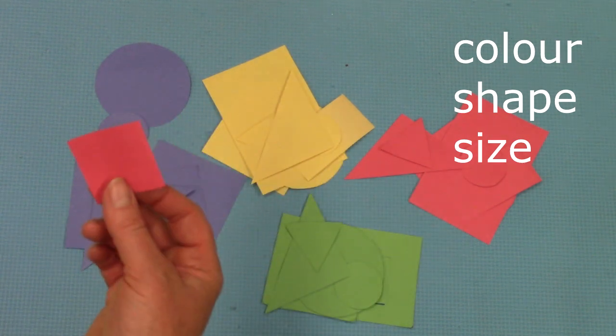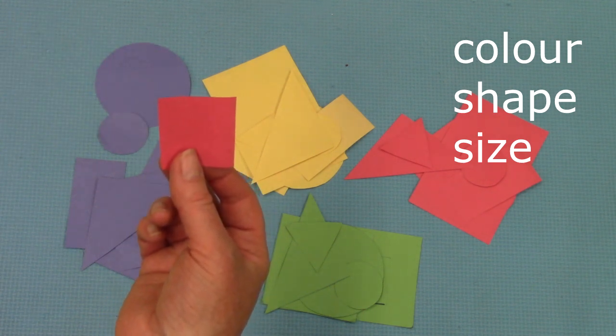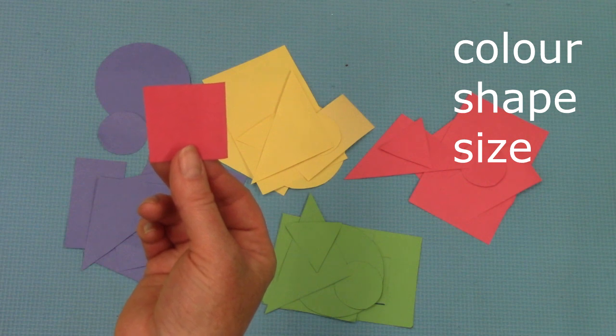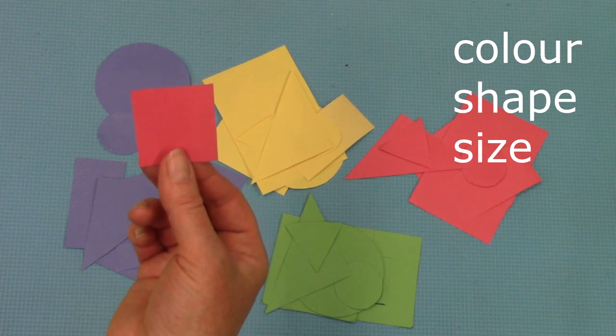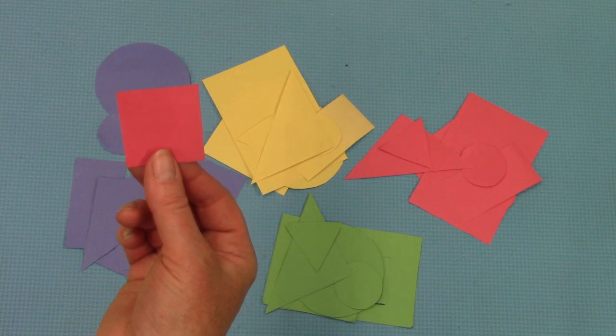What about this shape? Can you tell me three things about it? Its color is red, its shape is square, and its size is small.